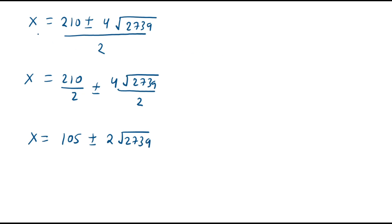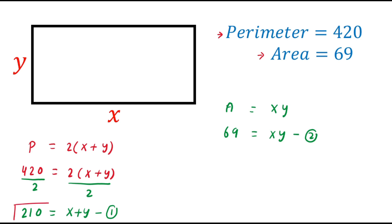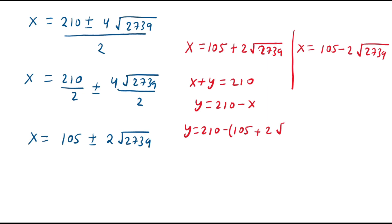We have two possible values of x. The first value is x equals 105 plus 2 times square root of 2739, and the second value is x equals 105 minus 2 times square root of 2739. From equation one, y equals 210 minus x. So for the first case, y equals 210 minus (105 plus 2 times square root of 2739), giving y equals 105 minus 2 times square root of 2739.